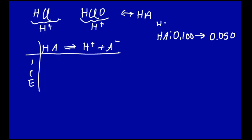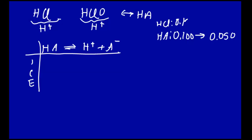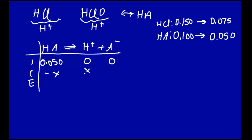In the same way for the HCl, initially that was 0.15 molar; we dilute by half, that's 0.075 molar. Let's use 0.05 molar as our initial concentration of HA, with initially zero H⁺ and zero A⁻. We're just considering the protons coming from the weak acid. So the change row is minus X, X, and X, giving equilibrium concentrations of 0.050 minus X, X, and X.